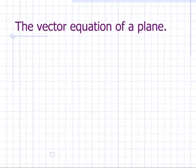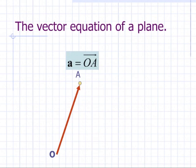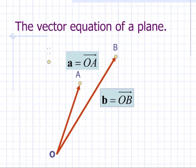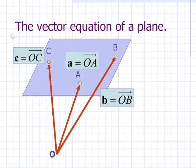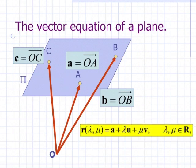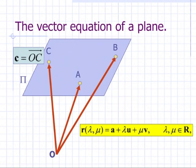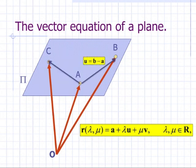Suppose we have a plane through the points A with position vector A, B with position vector B, and C with position vector C. We call this plane pi. Then the vector equation of this plane is R(lambda, mu), with two parameters, equal to A plus lambda U plus mu V, where U is B minus A and V is C minus A.